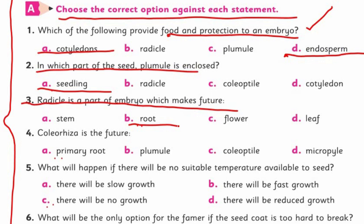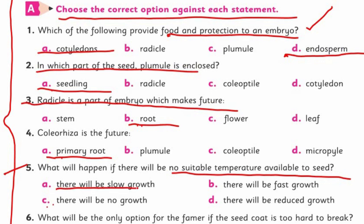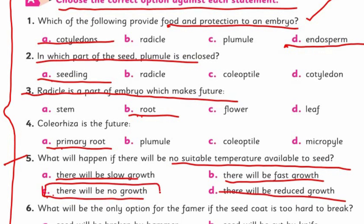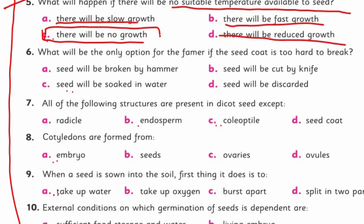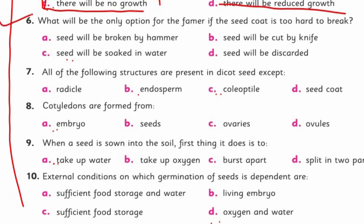The coleorhiza — from the coleorhiza the primary root forms. We can simply say that. Question five: what will happen if there is no suitable temperature available to the seed? There will be slow growth, fast growth, no growth, or reduced growth. Of course, there will be no growth at all.